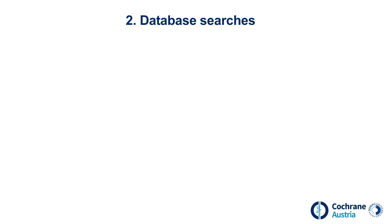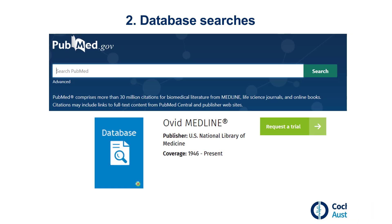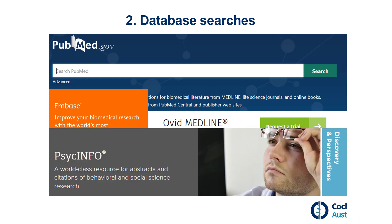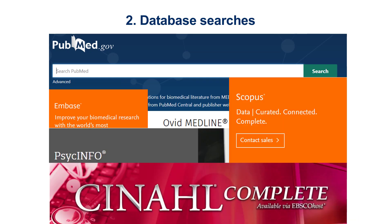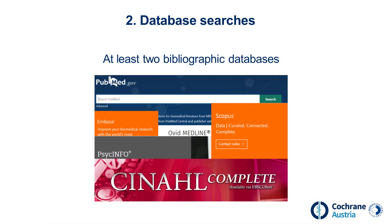Searching in bibliographic databases such as Medline, Embase, PsycInfo, CINAHL, or Scopus is at the heart of the systematic search process. A comprehensive systematic search must be conducted in at least two bibliographic databases. The selection of databases depends on the research question. When researching healthcare topics, however, Medline should definitely be used.